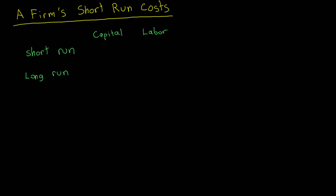In the short run, not all inputs can be varied. In contrast, all inputs can be varied in the long run. In most models of production you'll come across in microeconomics, there are typically two inputs: capital and labor. In the short run, typically labor is variable and capital is fixed.